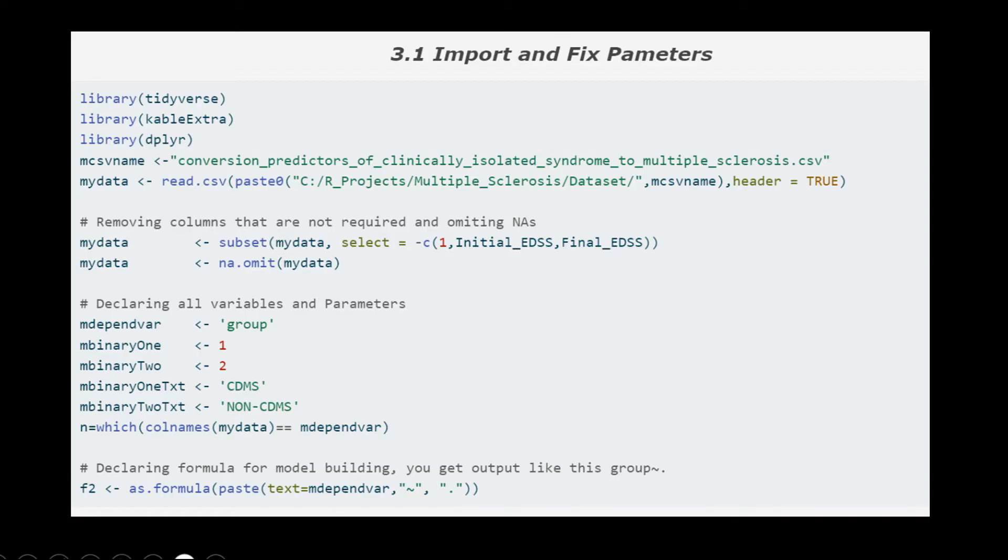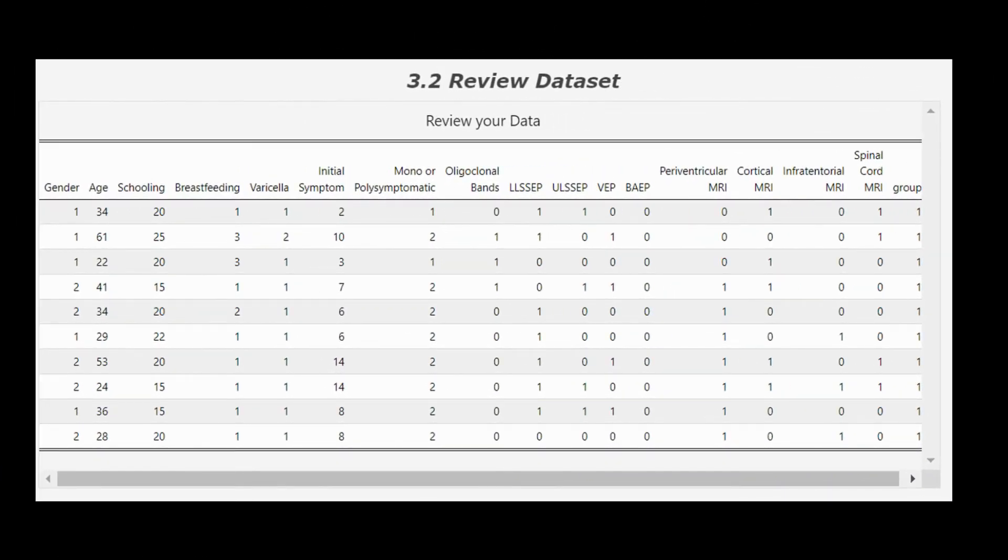Next, we declare the text for those binary values which are CDMS and non-CDMS. You could refer to the column description for the expansion of CDMS and non-CDMS. Next table shows the first 10 rows of the MS dataset, just for a quick overview.